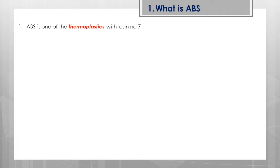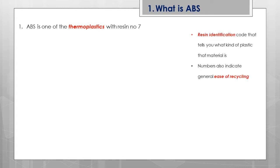ABS is one of the thermoplastics with resin number seven. The resin identification number serves two purposes: first, the end user can understand which material is used; second, it indicates ease of recycling. Number one means very easy to recycle, while number seven means it takes a little higher lead time or cost for the recycling process.